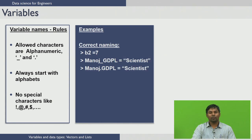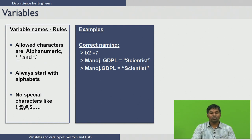This shows some examples of correct variable names in R. The first one, B2 = 7, assigns a value of 7 to variable B2. This is valid because it starts with an alphabet and contains only alphanumeric characters. Similarly, Manoj_GDPL = 'scientist' is also a valid variable name because the underscore is an allowed special character.